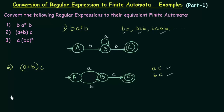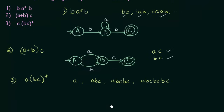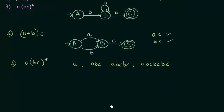Now let us come to number 3: A and, in brackets, B C star. Before designing the finite automata, let us see what strings are accepted. This means A followed by zero or more repetitions of the group BC. Since BC can be zero or more times, it could be just A, or ABC, or ABCBC, or ABCBCBC, and so on.